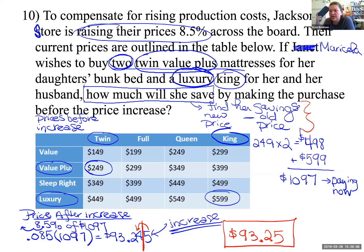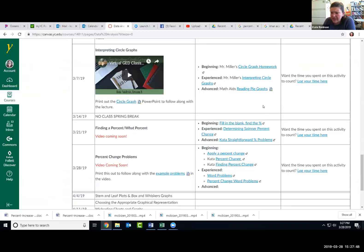Word problems, as we've seen throughout this unit, can be really complex and varied. There's not one right way to do a word problem. The mathematical reasoning skills are really what the GED is about, so we've got to develop those. Thanks so much for coming to virtual GED class today. Join us next class when we look at some tricky graphs — box and whisker graphs — types that GED students often aren't acquainted with.